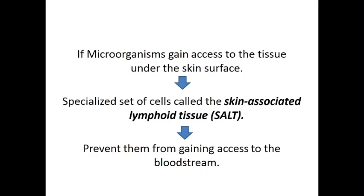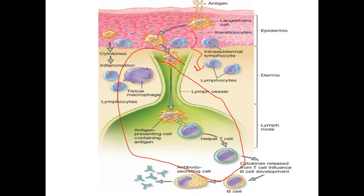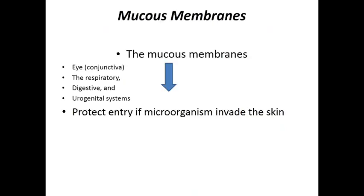If through a rupture of the skin some microorganism tries to enter the body, at the bottom layer there is SALT — skin-associated lymphoid tissue. This lymphoid tissue will eliminate microorganisms trying to enter from the skin into the bloodstream. Next is the mucous membrane — a sticky membrane present on the eye, respiratory, digestive, and urogenital tracts.